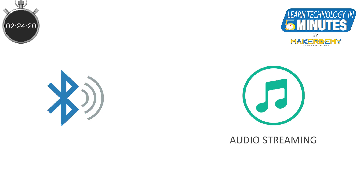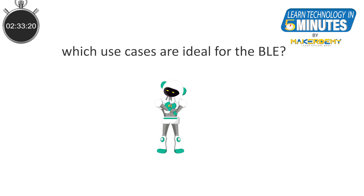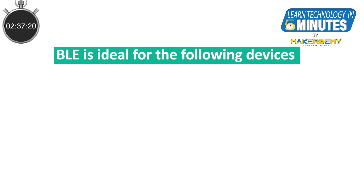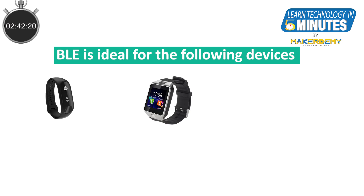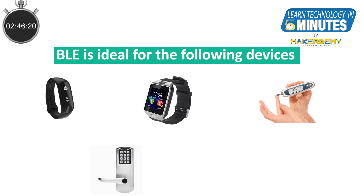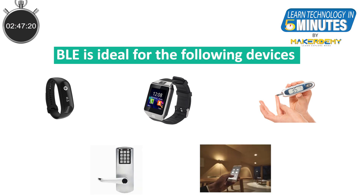It should be clear that BLE is not meant for the typical use cases of Bluetooth Classic such as streaming audio or large files. The BLE is ideal for wearable devices like fitness trackers, smart watches, personal healthcare devices, and home automation applications like smart locks and smart lighting.